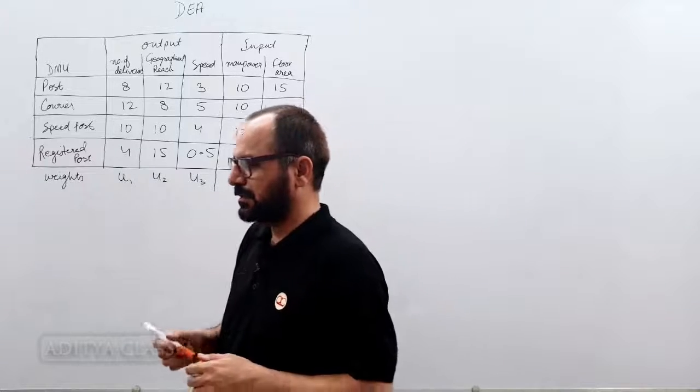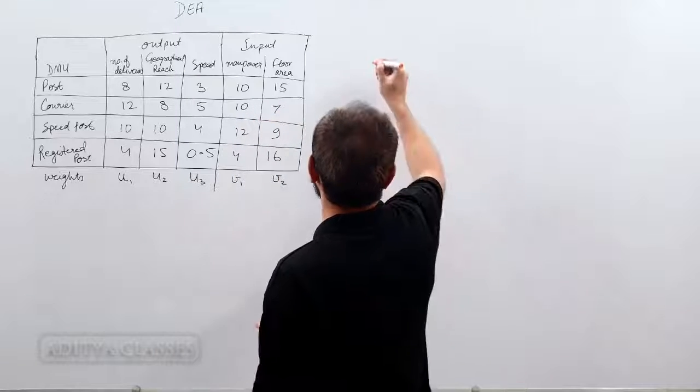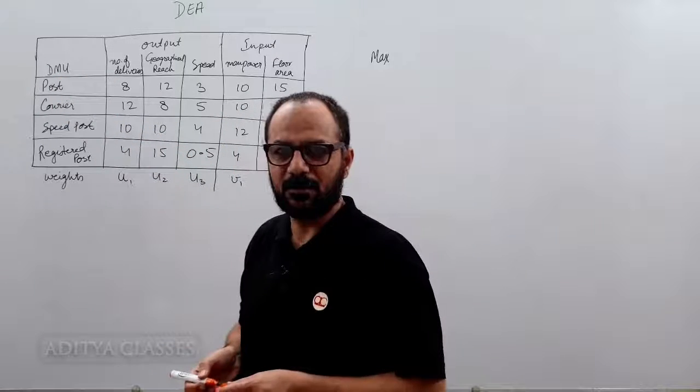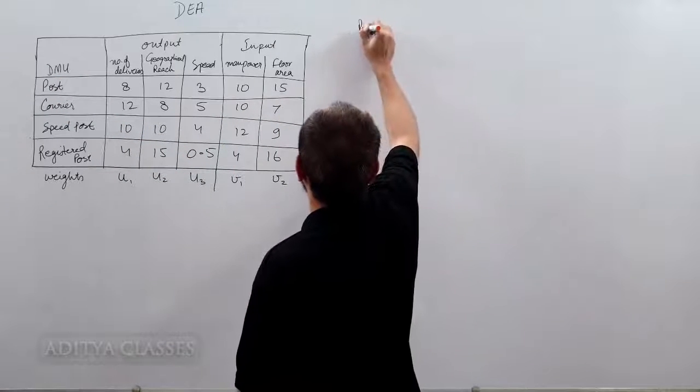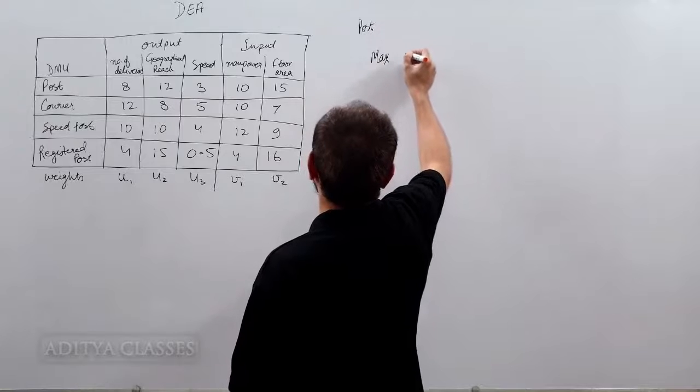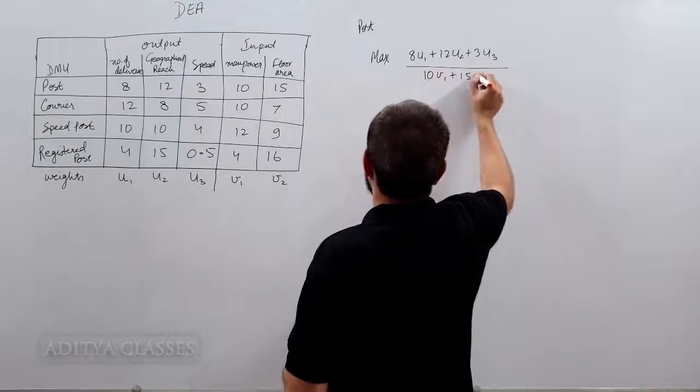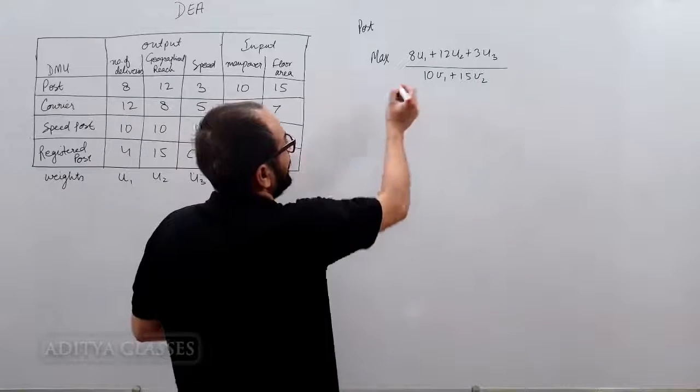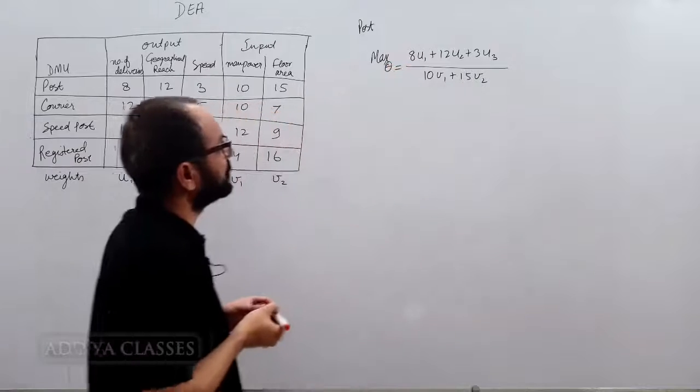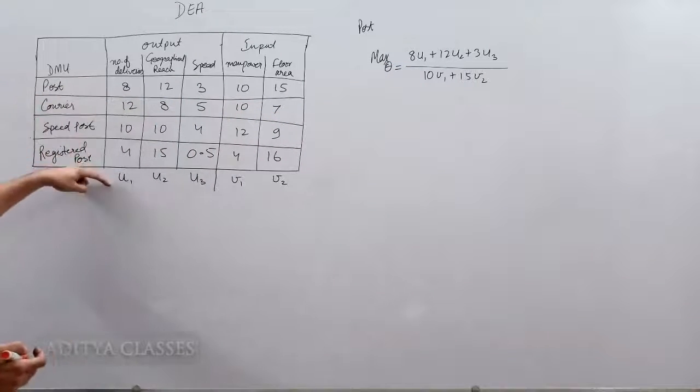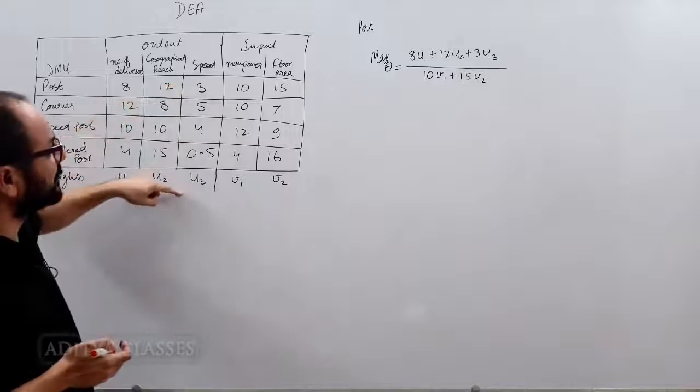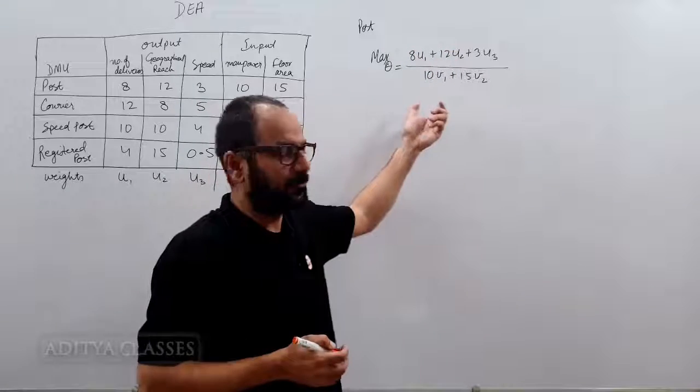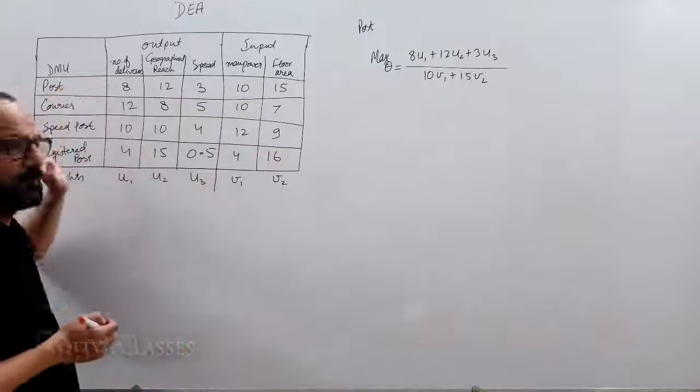What does simplex do in this case? Simplex tries to maximize. Let us say we are formulating it for post. Maximize theta, which is equal to 8u1 plus 12u2 plus 3u3 upon 10v1 plus 15v2. This is a weighted efficiency: weighted output upon weighted input. This is giving me efficiency of post department. My DMU is called post. I need to maximize this efficiency subject to certain constraints.